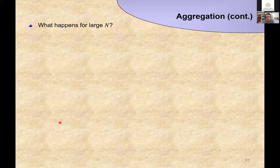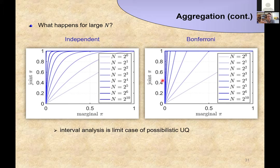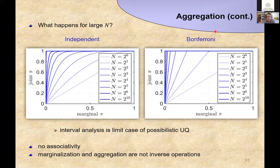An interesting question is what happens for large n. When aggregating many marginal distributions, we see that as n increases, the joint possibilities converge pointwise to a zero-or-one-valued possibility density. The same is true for Bonferroni aggregation, even worse. The conclusion is that if we have many marginal variables, it's not really sensible to perform possibilistic UQ — we can just use interval analysis because we're barely losing anything. Further issues with aggregation include lack of associativity, and the fact that marginalization and aggregation are not inverse operations.